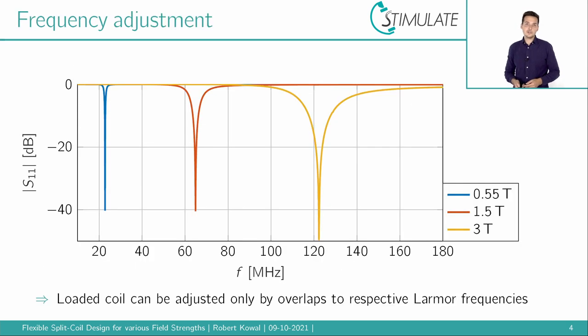The next step, the split coil model was loaded with a phantom and adjusted at different field strengths solely by changing the overlapping angle. For the exact values and other parameters, I would like to refer to our abstract. A successful adjustment is here now visualized by the reflection coefficient S11 for the 0.55, the 1.5 and the 3 Tesla coil.